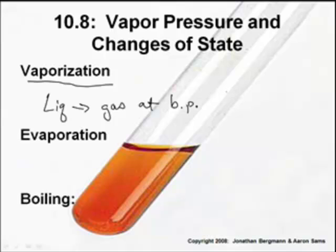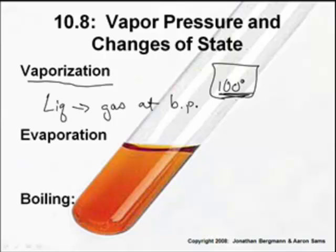Water boils at 100 degrees, right? Yeah, if we live at sea level. Other things boil at different temperatures — just water boils at 100. So other things can boil at different temperatures. Don't get stuck on 100 unless you're dealing with water, and that only applies at sea level, even for water.